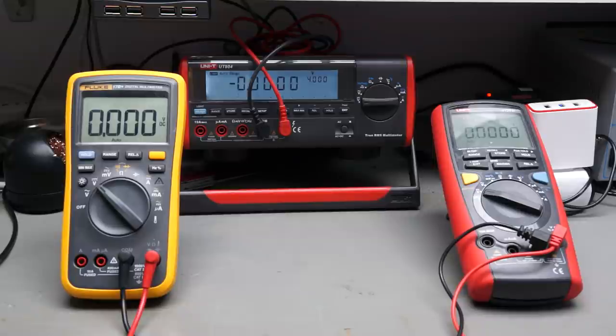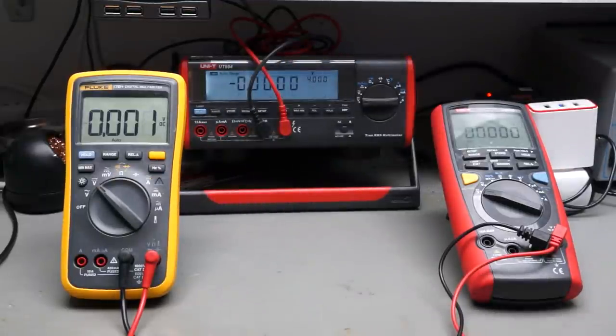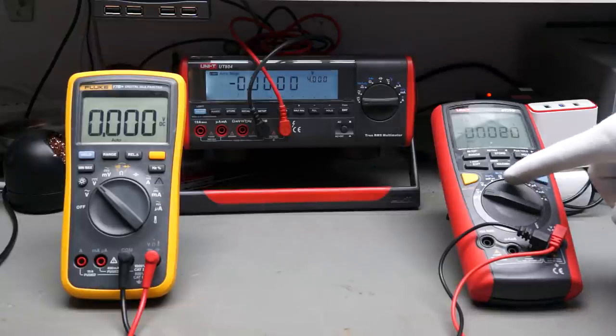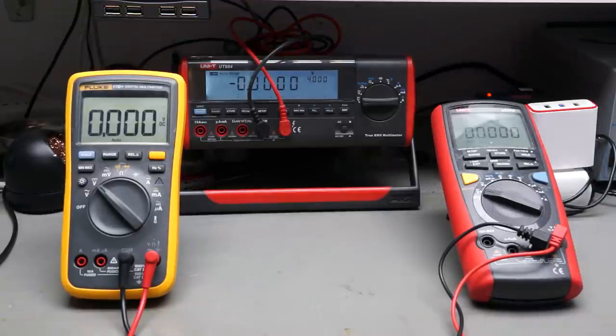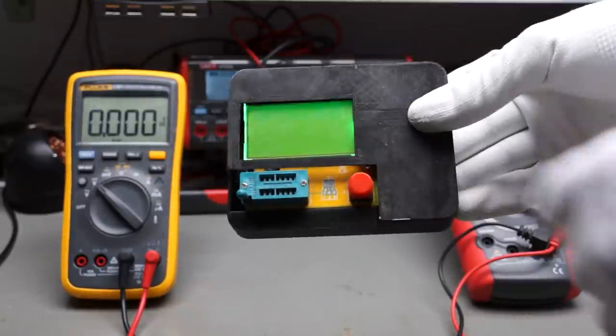I suggest buying a multimeter with auto-ranging, because it is annoying to interrupt a measurement if you found the right points on your PCB and the range is not correct. This is called a nerd's coitus interruptus. I would not spend a lot on additional functions like capacity or transistor testing on a multimeter. I would rather suggest buying one of these cheap transistor testers.